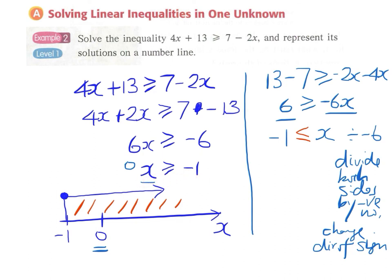This second method requires us to change the direction of the inequality sign, which is quite difficult because it is very easy to overlook or ignore. So remember: the hint for solving inequalities is that if possible, we don't want a negative coefficient for x — we want a positive coefficient for x.